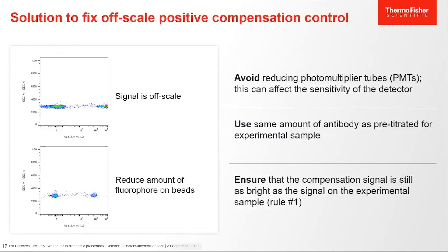If the compensation control is off-scale, there is a solution to fix this. First, try to avoid reducing your PMTs, as this can affect the sensitivity of the detector that was previously optimized. Some researchers will slightly adjust their voltages, usually for low-expressing markers, by using cells stained with the experimental antibody. But in general, detector settings should be kept consistent. The recommendation is to use the same amount of antibody as would be used on cells, predetermined by titrating your antibodies. Remember to ensure that Rule 1 still applies and the compensation signal is still as bright or brighter than the signal on your experimental sample.